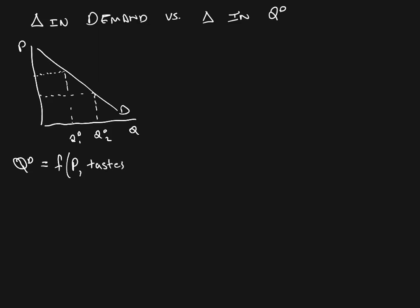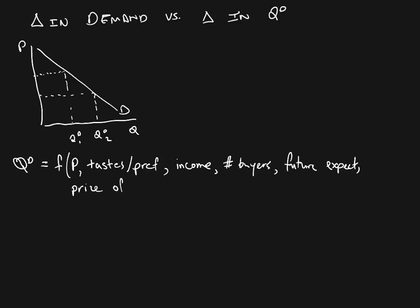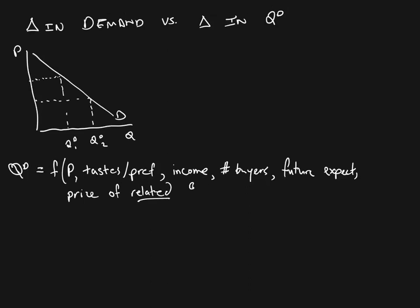The determinants of demand include tastes and preferences of buyers, which affect how much buyers want to buy. Income is going to affect how much they want to buy. The number of buyers in the market is going to affect how much will be bought at every possible price. Additionally, we have future expectations regarding price — buyers care not only about what the price is today, but what they think the price will be in the future. And it also depends on the price of related goods.